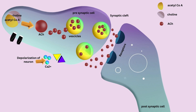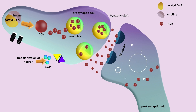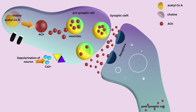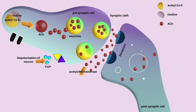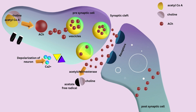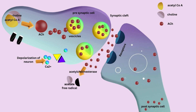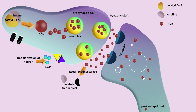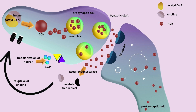This acetylcholine is taken up by the receptors present on the postsynaptic neuron cells. The excess acetylcholine breaks down into acetate as a free radical and choline with the help of acetylcholinesterase at the synaptic cleft.